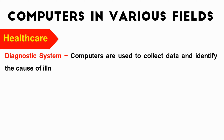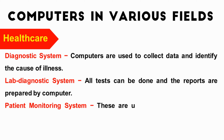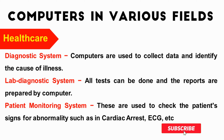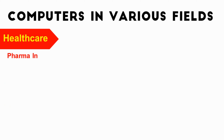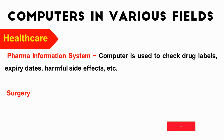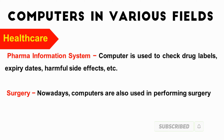Major fields of healthcare where computers are used include: Diagnostic Systems — to collect data and identify the cause of illness; Lab Diagnostic Systems — where all tests and reports are prepared by computer; Patient Monitoring Systems — to check patients' signs for abnormality such as cardiac arrest and ECG; Pharma Information Systems — to check drug labels, expiry dates, and harmful side effects. Computers are also now used in performing surgery.